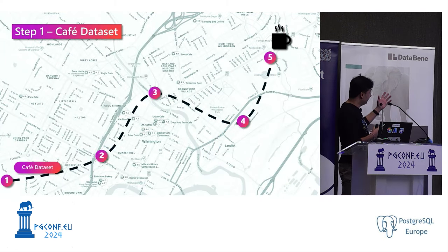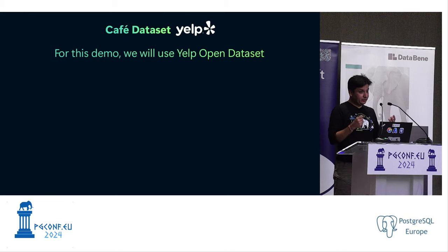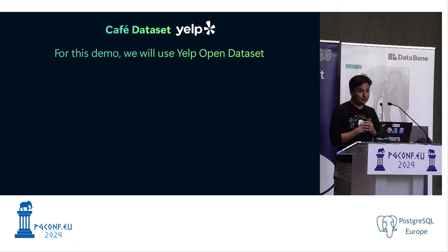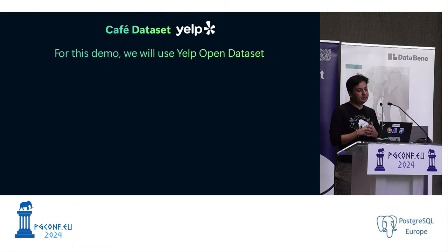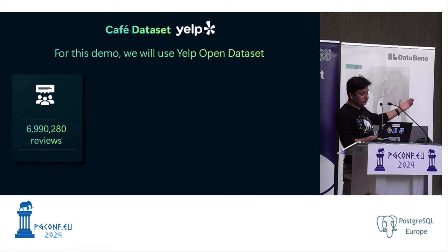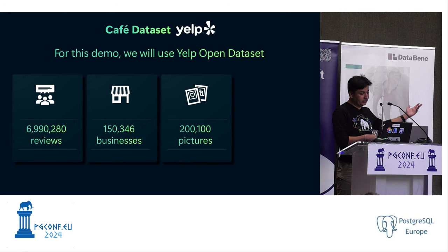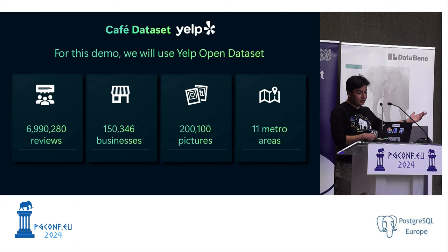For this presentation, I'm using the Yelp open dataset, which is available for anyone to use. It's a pretty big and complex dataset containing multiple businesses with location, reviews, and categories. It has almost 6.9 million reviews, 150,000 businesses, approximately 200K pictures, and covers 11 metro areas — a lot of diverse data.